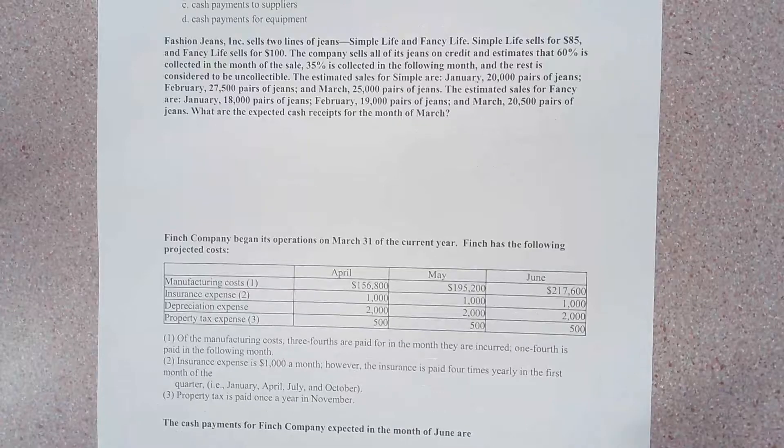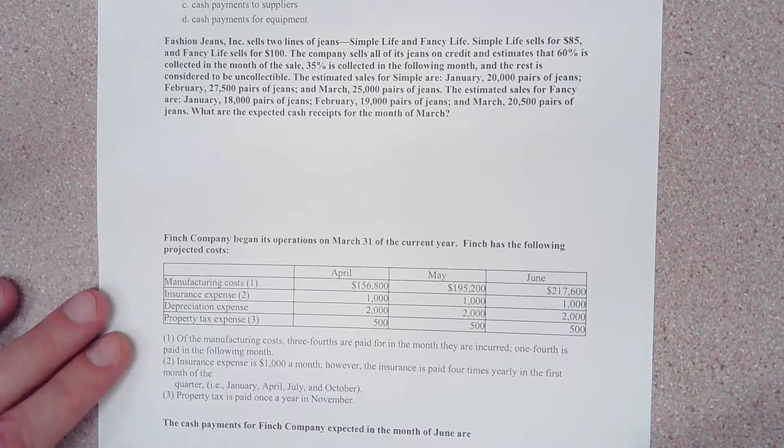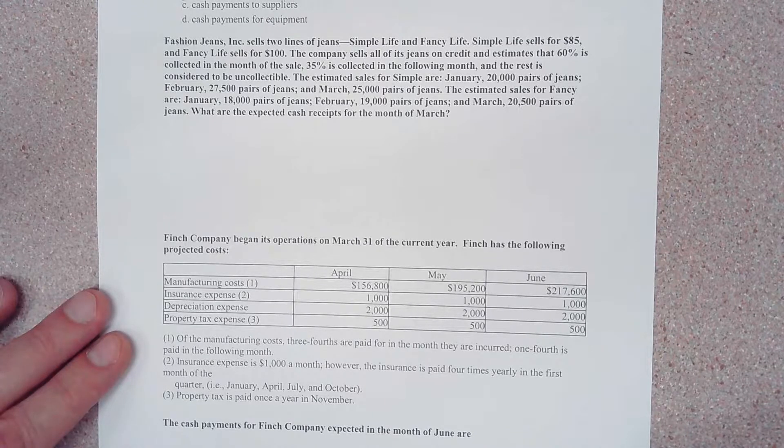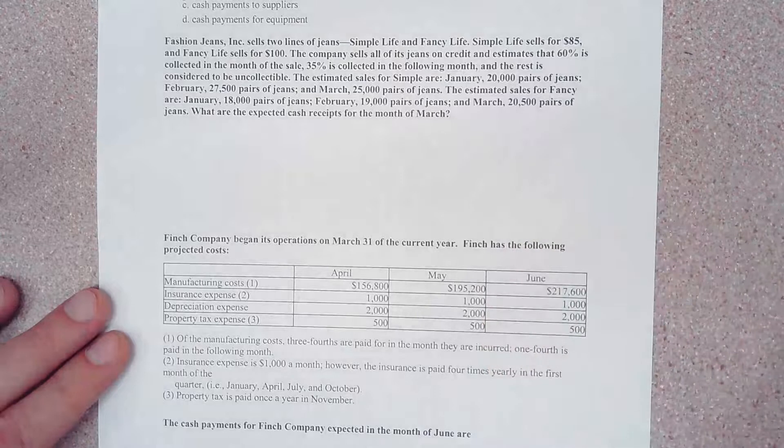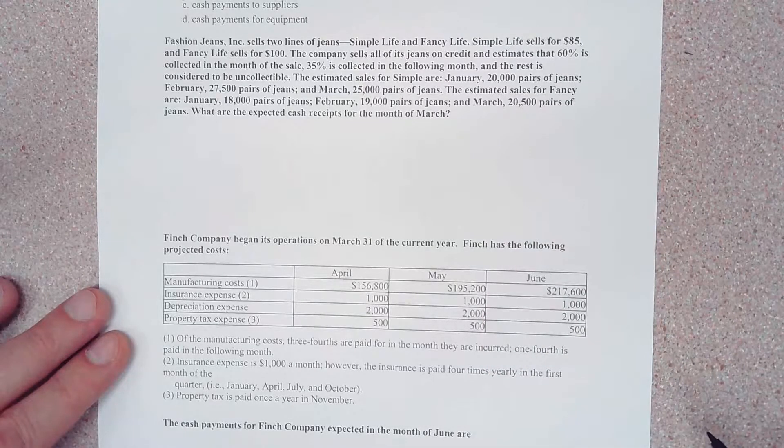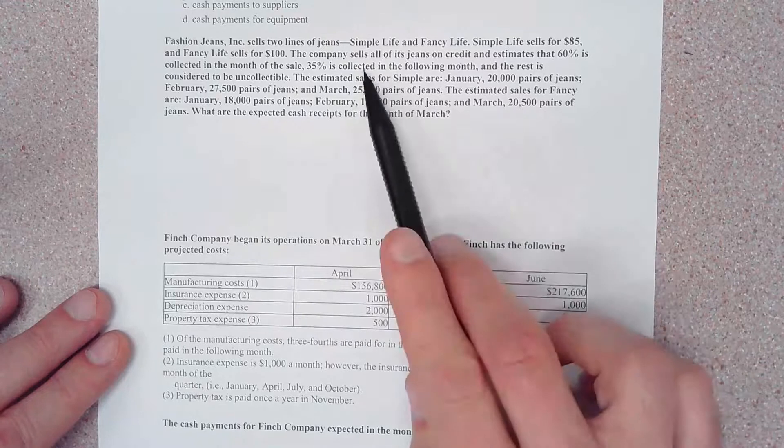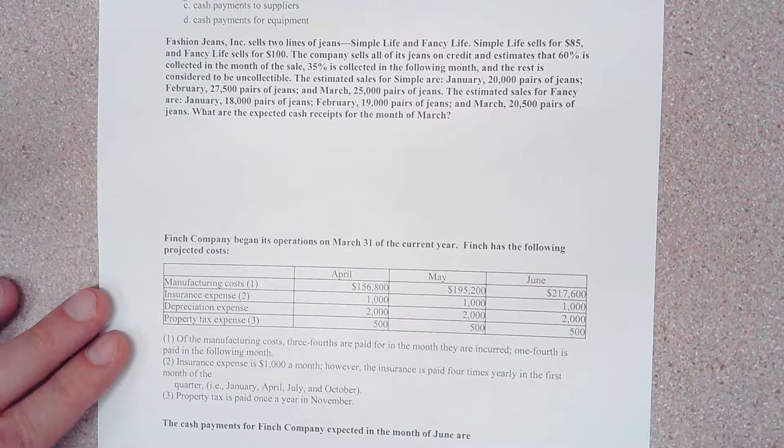Fashion Jeans Inc. sells two lines of jeans: the Simple Life and Fancy Life. Simple Life sells for $85 and Fancy Life sells for $100. The company sells all of its jeans on credit and estimates that 60% is collected in the month of the sale, 35% is collected in the following month, and the rest is considered to be uncollectable.